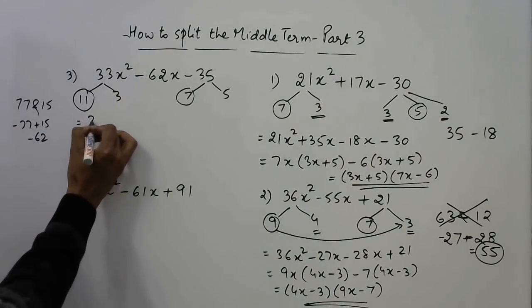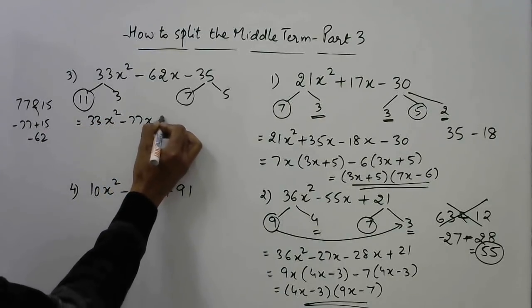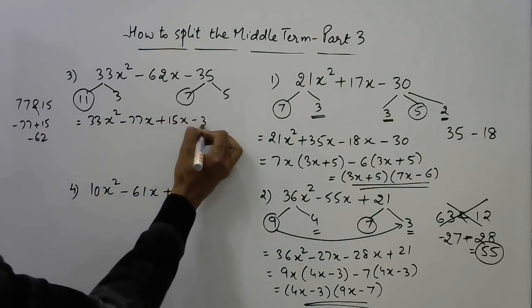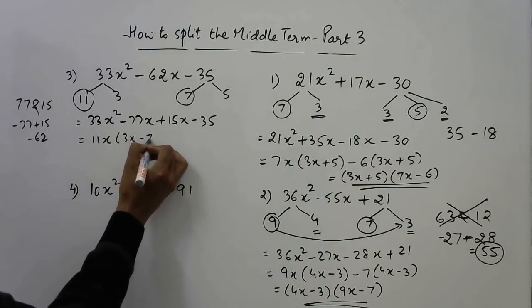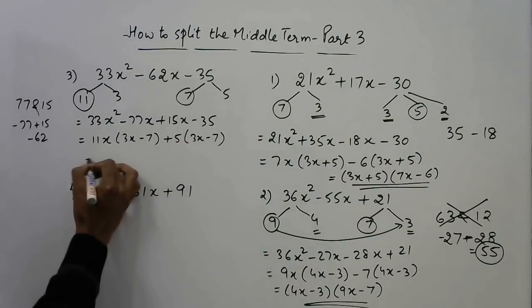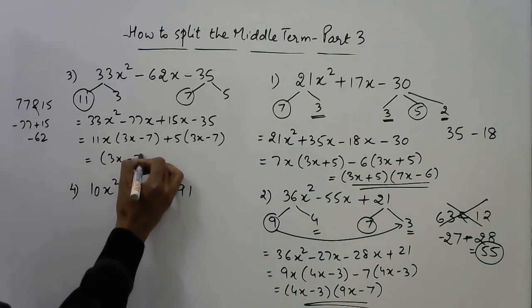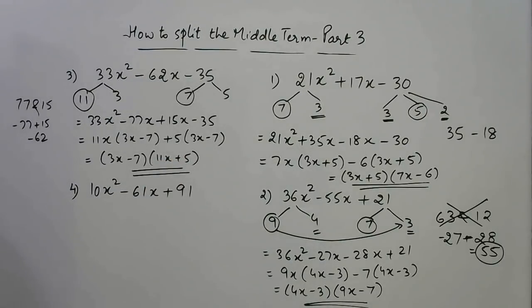Now the product is negative and the central term is also negative. So the higher number will be negative and the smaller will be positive thereby giving you minus 62 as the required middle term. So we have factorized it 33x² minus 77x plus 15x minus 35. So this is 11x common, 3x minus 7, 5 common, 3x minus 7. So 3x minus 7 is the first factor and 11x plus 5 is the second factor.